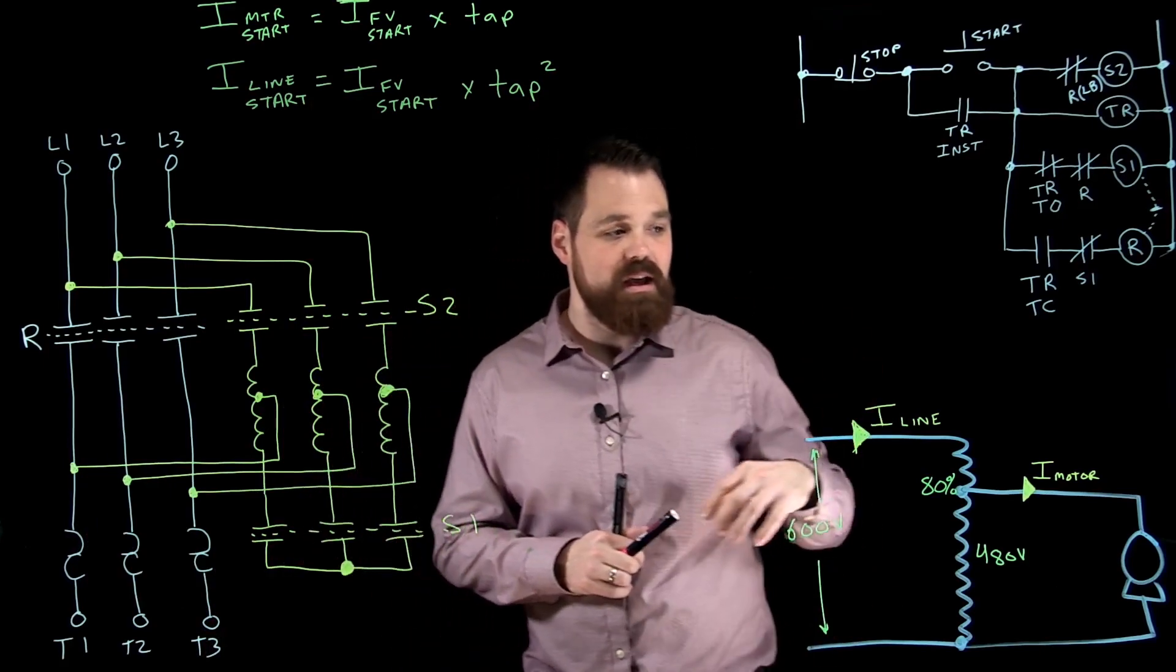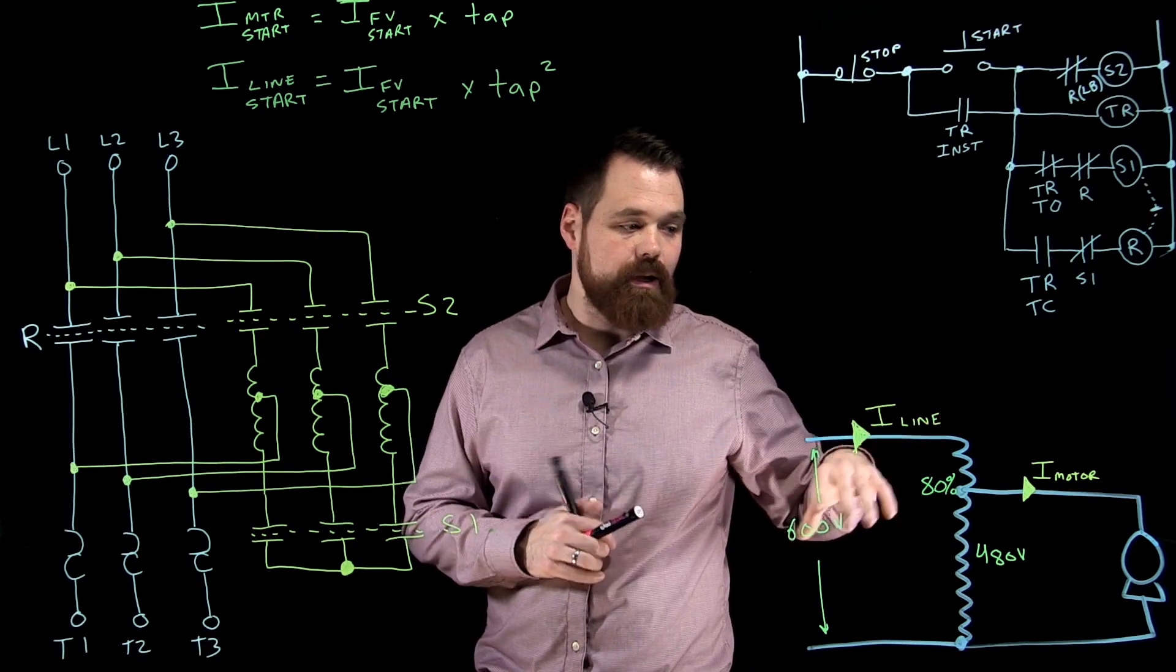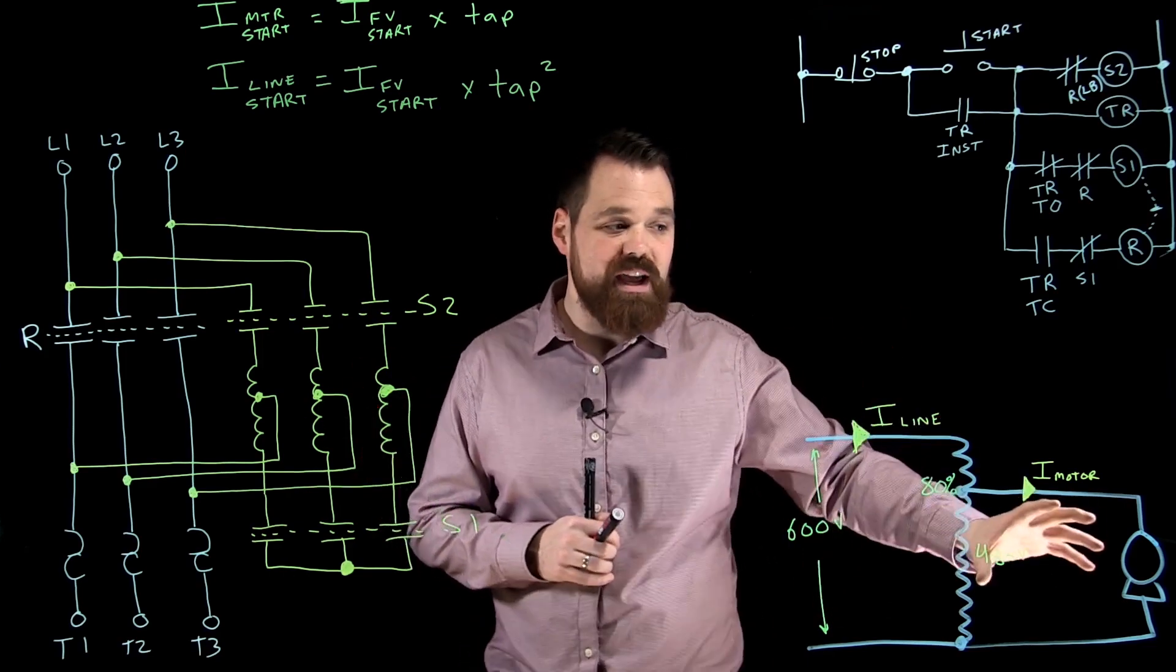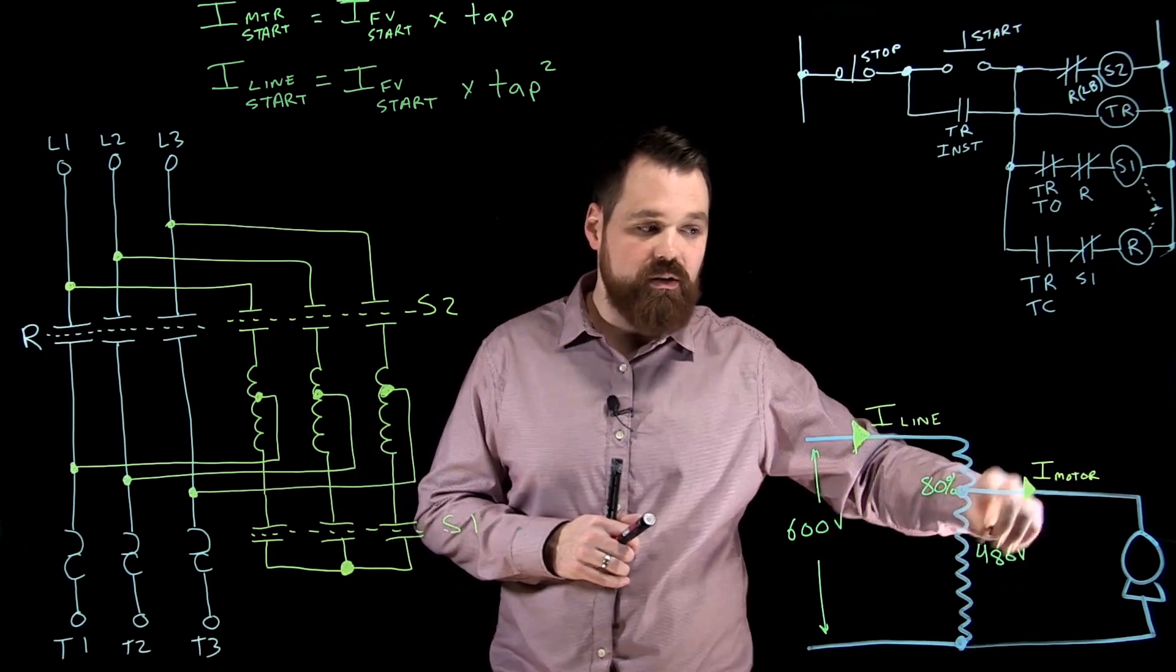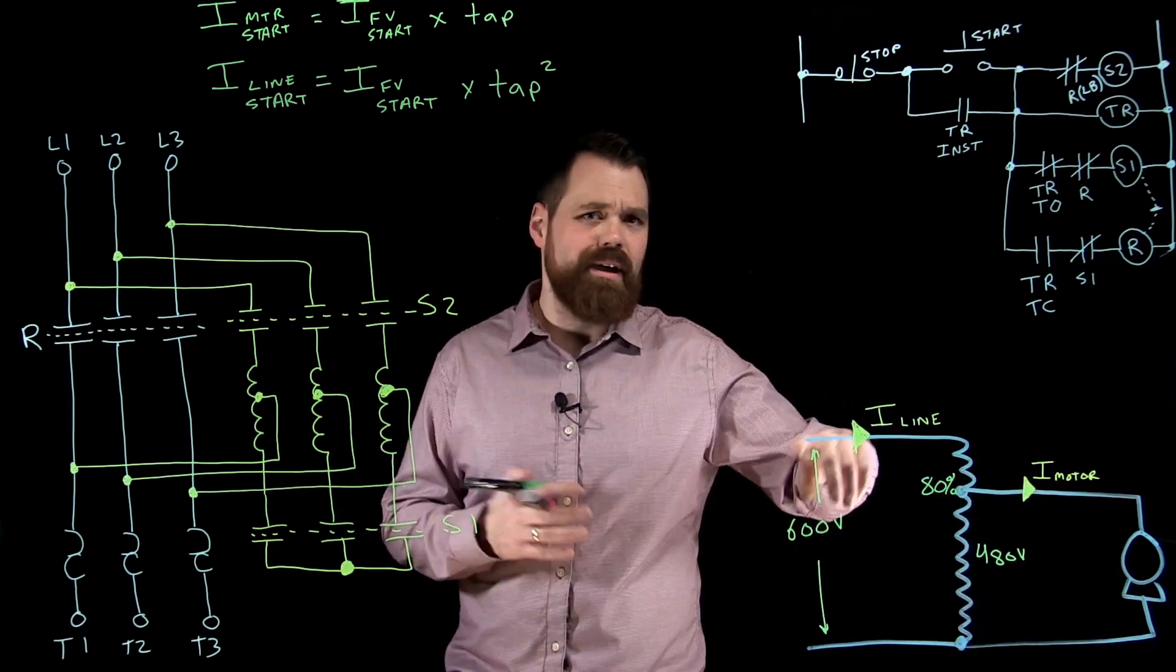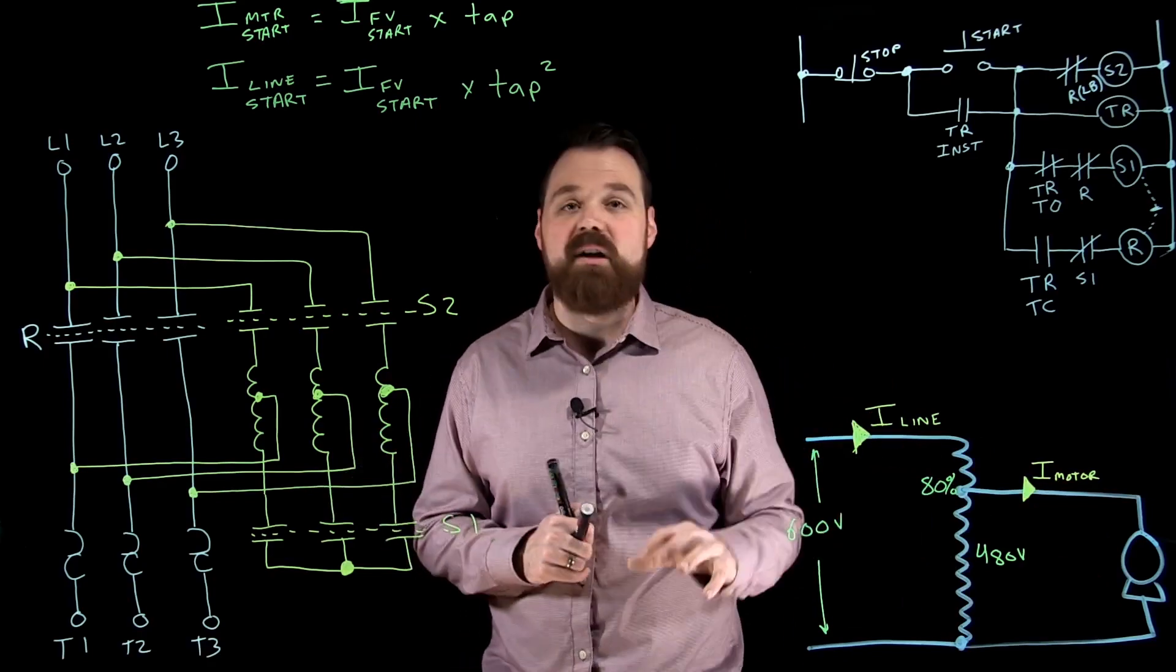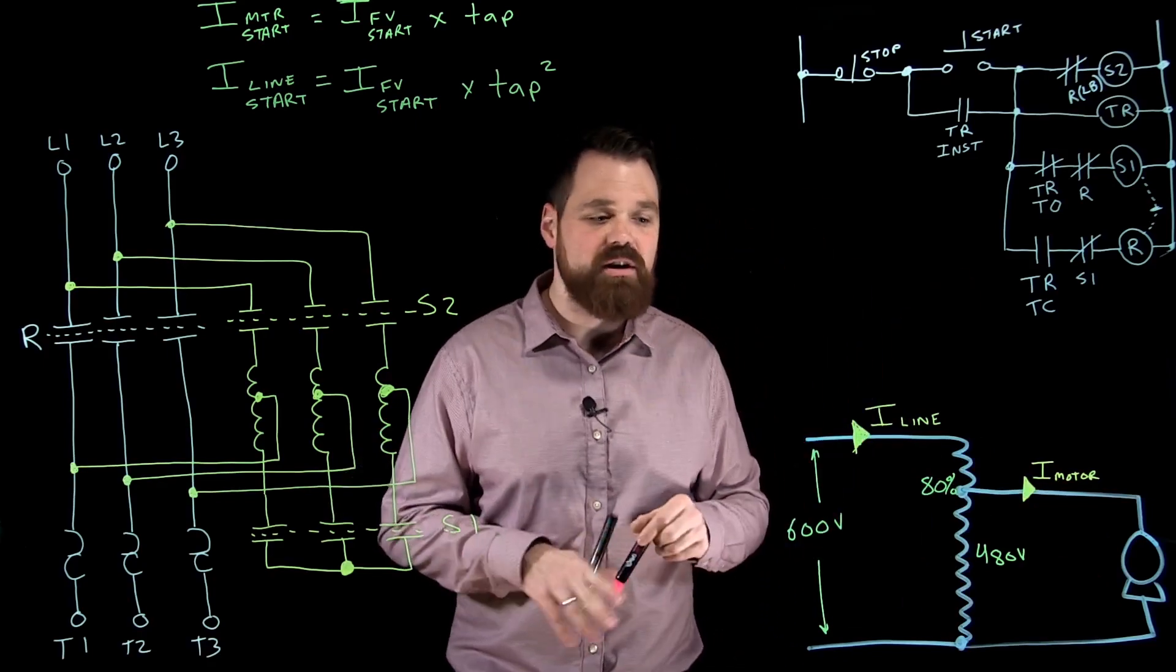Hypothetically, if this motor was a 100 amp start normally, it would be 80 amps at start at the motor, and then 64 amps for my line. We see that double reduction in line current.